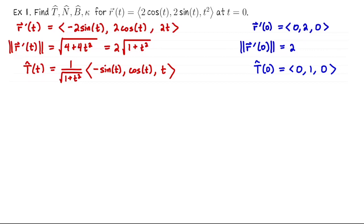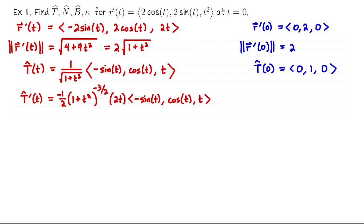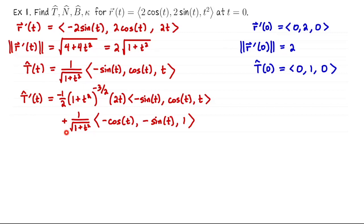To compute the unit normal vector N-hat we need to differentiate T-hat, so it's important to keep everything as a function of t. We use the product rule: derivative of the scalar times the vector, plus the scalar times the derivative of the vector. At t equals 0, the whole first term vanishes due to the 2t factor, and the scalar becomes 1, so T-hat prime at 0 simplifies to (-1, 0, 1).